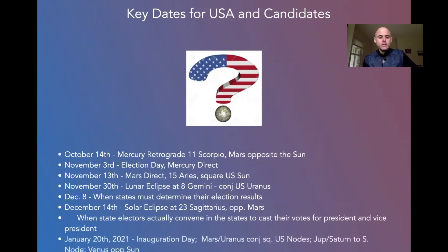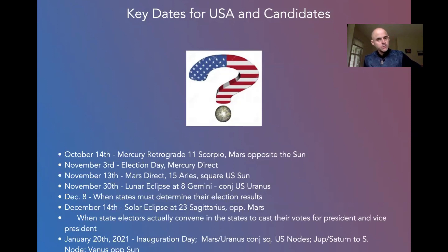January 20th, 2021 is inauguration day. It has to happen that day — this is part of the constitution, unless that also gets changed. We're going to look at this in a minute because we have a lot to say about the inauguration chart and some of the transits there.